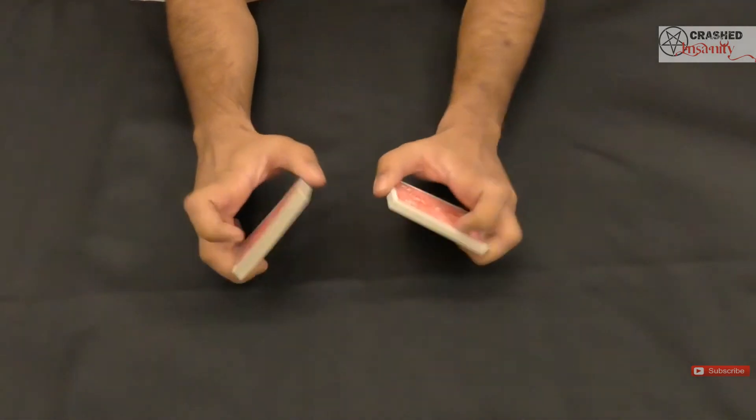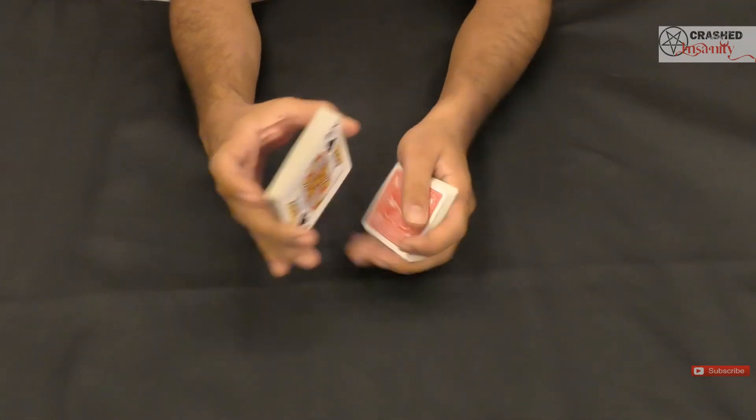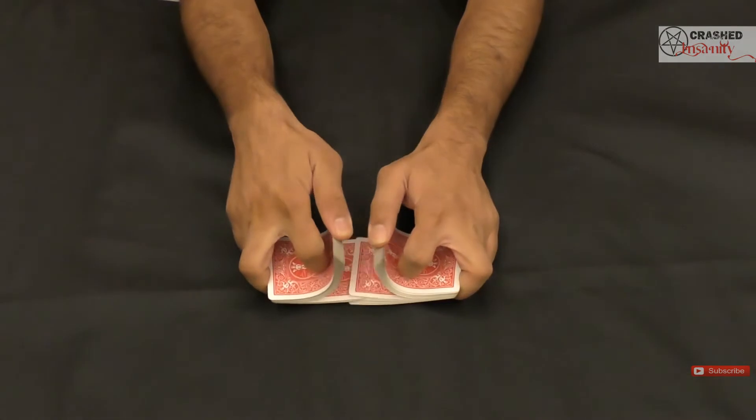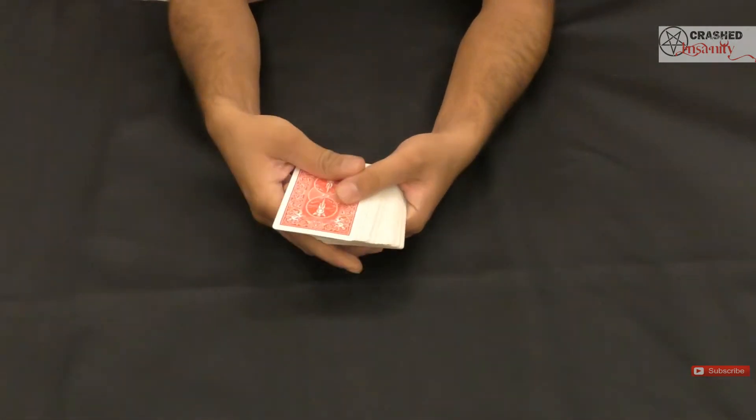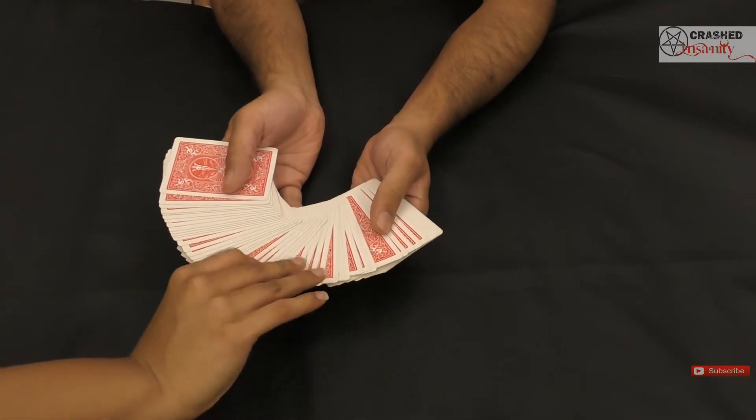I'll give the cards a couple of shuffles just to mess around the order even more. After shuffling the cards, we'll ask the spectator to pick any card at random. It's a completely free choice; they can go ahead and pick whatever card they want.